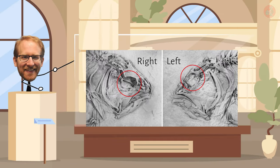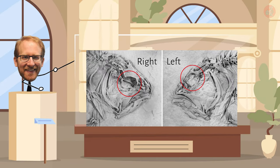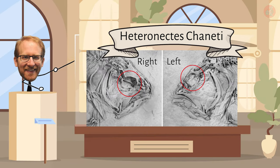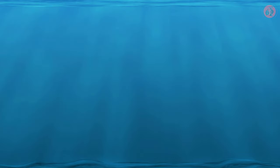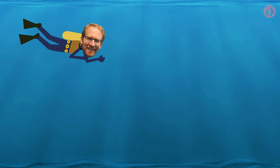He named this fish Heteronectus Cenetti, which translates to 'different swimmer,' in reference to its unique swimming style, similar to flounders.